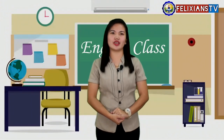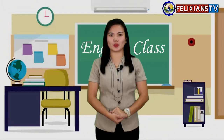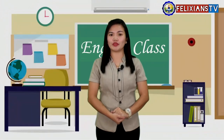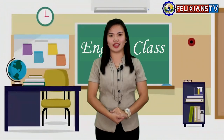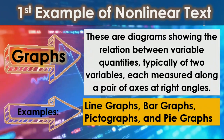The first example of non-linear text is graphs. These are diagrams showing the relation between variable quantities, typically of two variables, each measured along a pair of axes at right angles. The examples are line graphs, bar graphs, pictographs, and pie graphs.